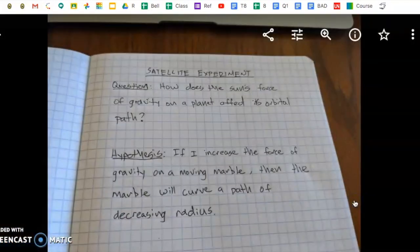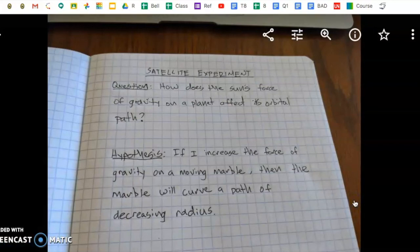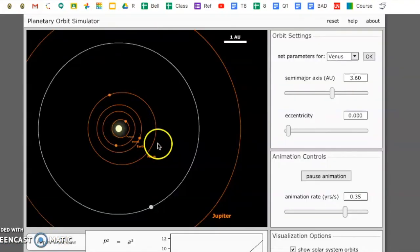And then you can actually see if you support or refute your hypothesis. Remember again that our hypothesis is that we can increase the force of gravity on the moving marble, then the marble will curve a path of decreasing radius. We can continue to see and discover more things about planets and verify if our discoveries about astronomy are true. Go ahead and perform this experiment. I was thrilled with my results and I hope that you will be too. Good luck!